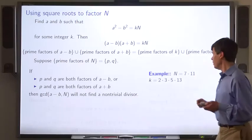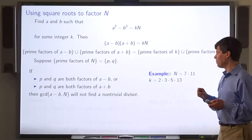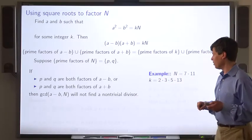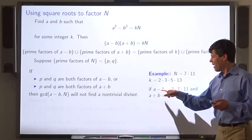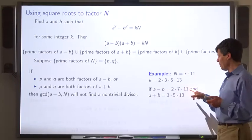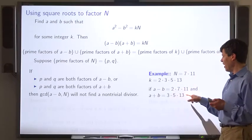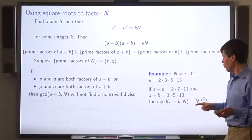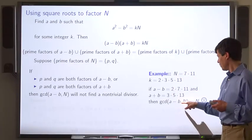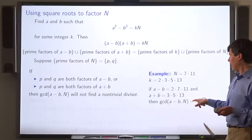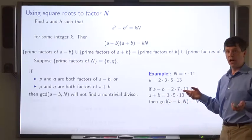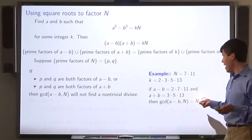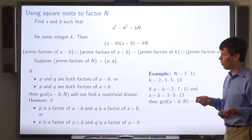here's an example. Let's say n is 7 times 11 and k is 2 times 3 times 5 times 13. Well, if a minus b is 2 times 7 times 11 and a plus b is 3 times 5 times 13, that'll work out. Then when you take the GCD of a minus b with n, it's not going to find a non-trivial divisor. It's just going to give you n. So that didn't quite work.